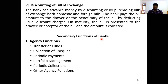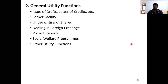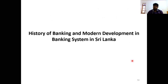Agency functions of the bank include transfer of funds, collection of checks, periodic payments, portfolio management, periodic collections, and other agency functions. General utility functions include issue of drafts, letters of credit, locker facility, safety locker facility, underwriting of shares, dealing in foreign currency and foreign exchange, project reports, social welfare programs, and other utility functions. Next we will discuss the history of banking.